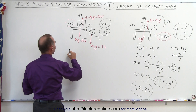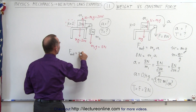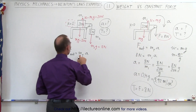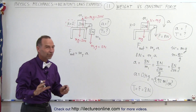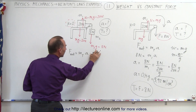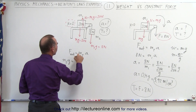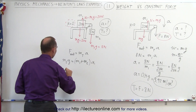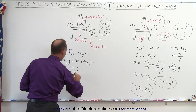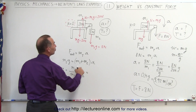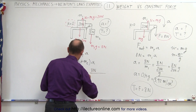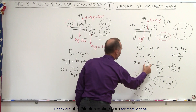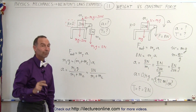Writing F_net equals total mass times acceleration, notice the key difference: on the right side the total mass was only M1, but here the total mass is the sum of both masses, M1 plus M2. The net force is M2g, equal to the total mass M1 plus M2 times acceleration, so acceleration equals M2g divided by M1 plus M2. On the right we had 8 newtons divided by M1 alone, but here we have 8 newtons divided by M1 plus M2.